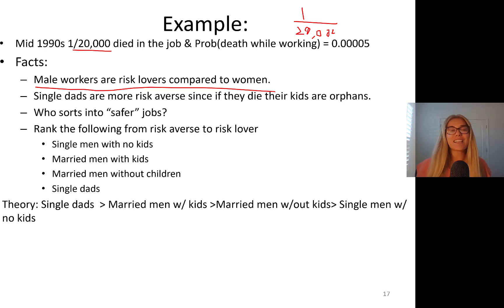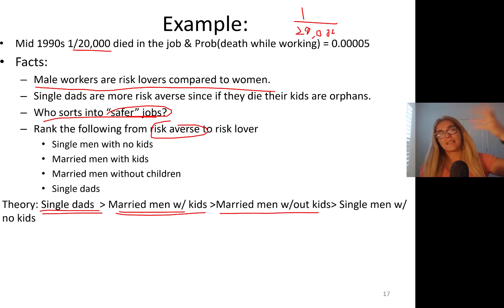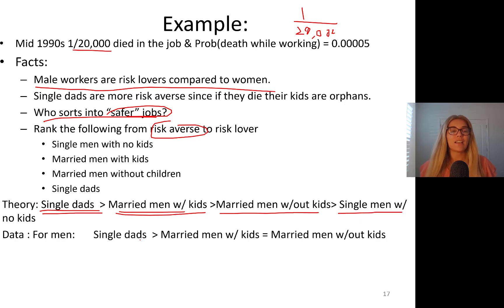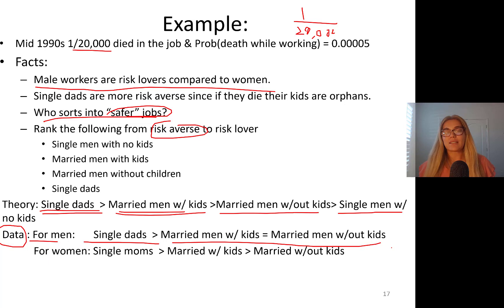Theory says single dads are the most risk averse. Ranking from most risk averse to most risk loving: single dads first, then married men with kids (second most risk averse), then married men without kids (they still have a family, so more risk averse than single men with no children), and finally single men with no kids are the least risk averse. Data confirms this for men — single dads most risk averse, then married with kids, married without kids essentially the same level, and single men with no kids least risk averse.